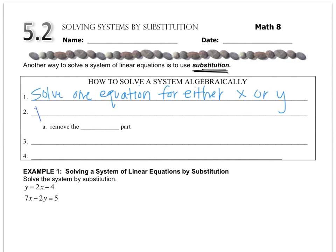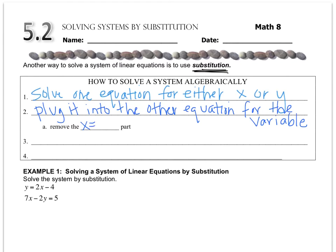Then the second step is to plug it into the other equation where you see that variable. Obviously, you're going to remove either the part that says x equals or the part that says y equals, because you're going to plug it in for that variable.